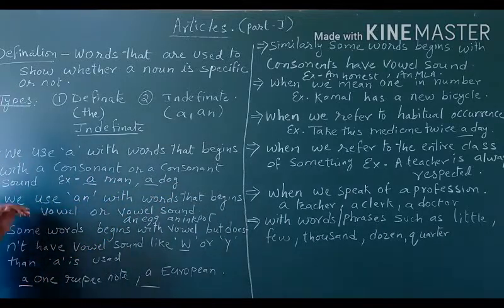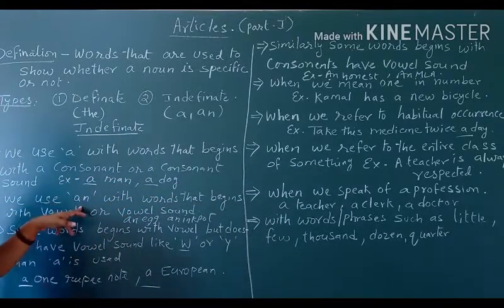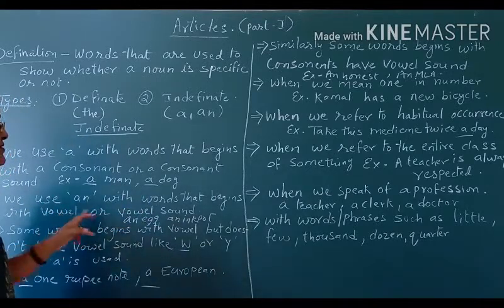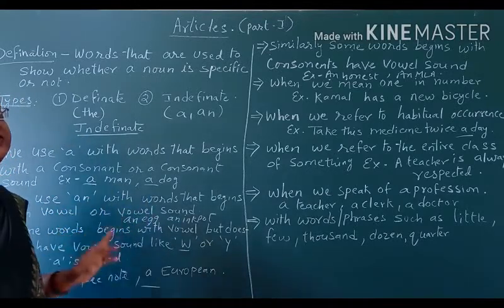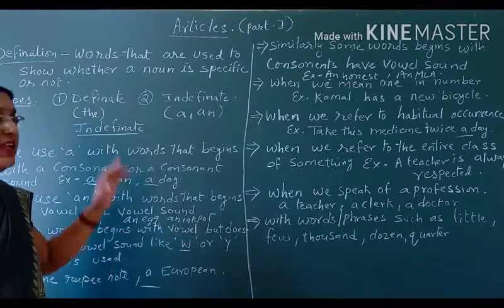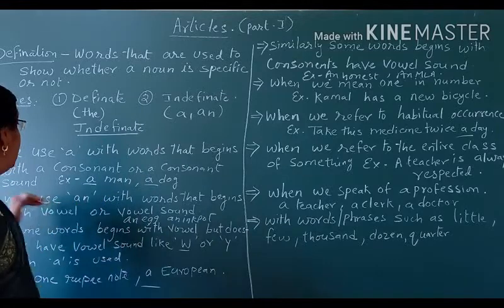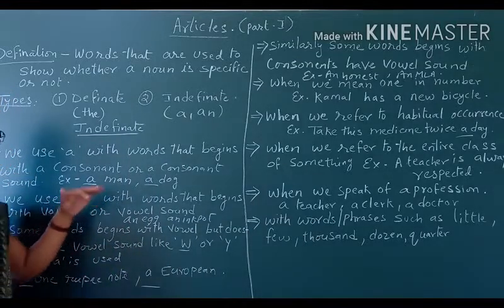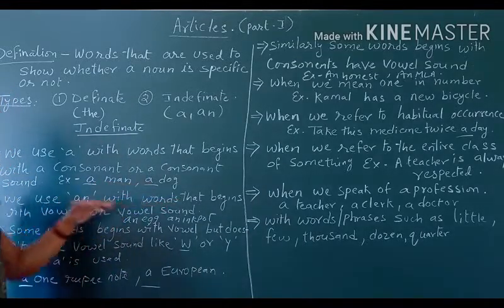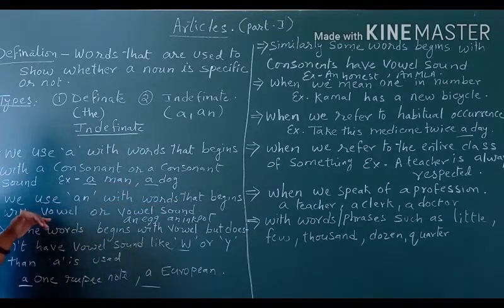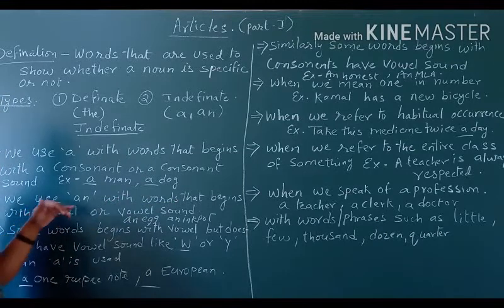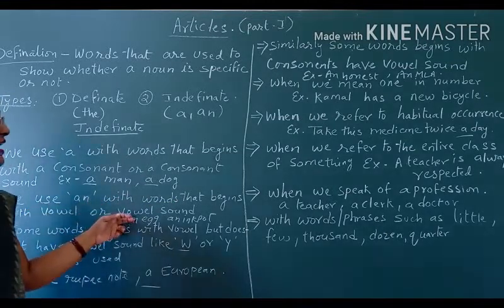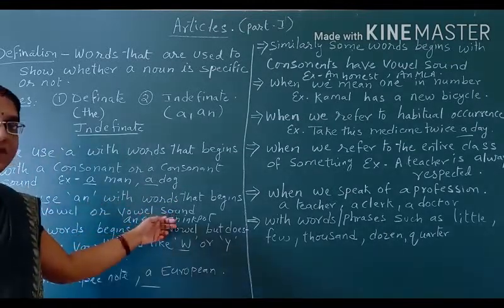We use 'an' with words that begin with vowels or a vowel sound. On the other hand, we put 'an' with words that begin with a vowel sound. For example: an egg, an import.